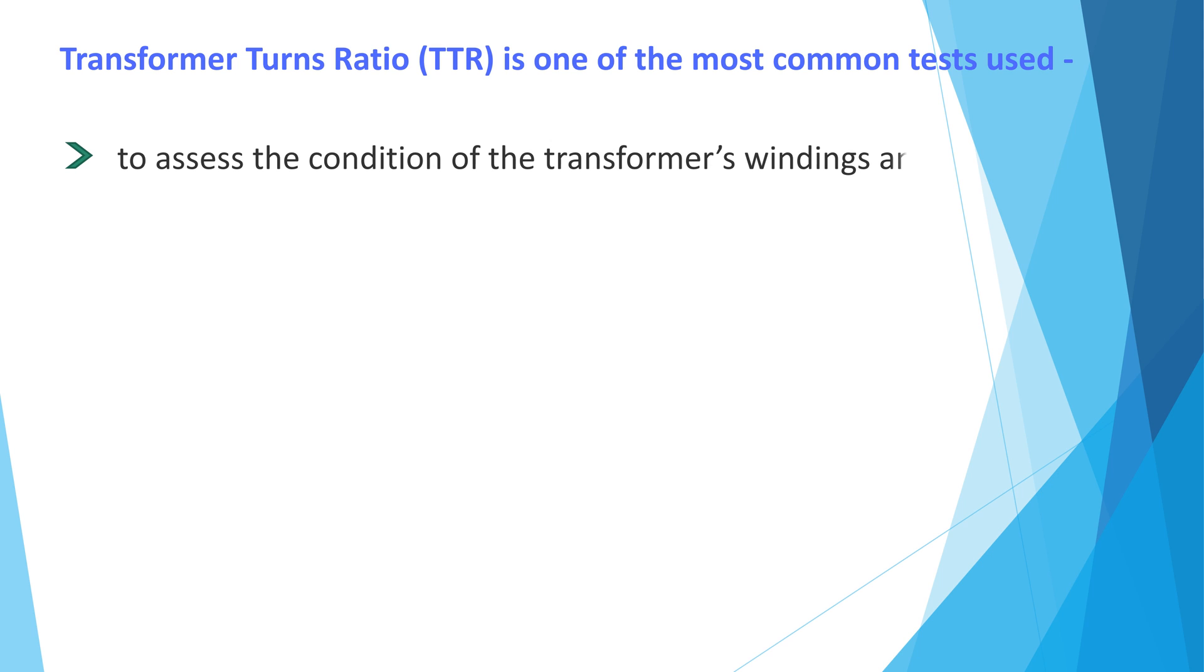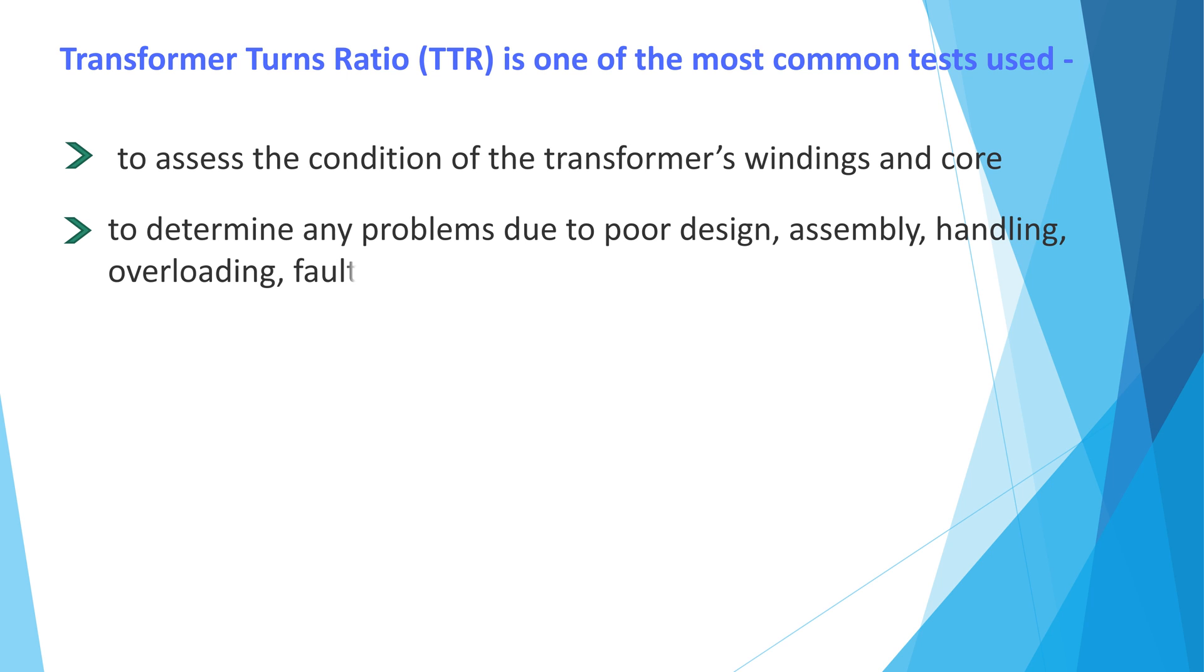Transformer turns ratio TTR is one of the most common tests used to assess the condition of transformer's winding and core, to determine any problem due to poor design, assembly, handling, overhauling, fault conditions, and poor maintenance.